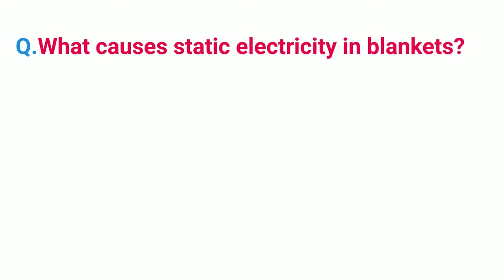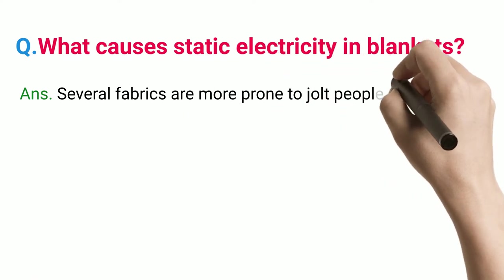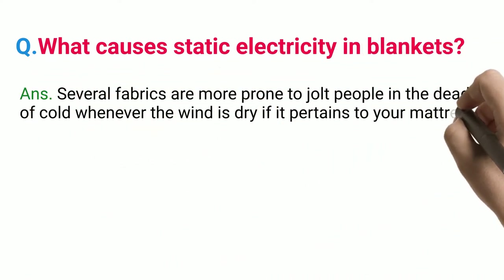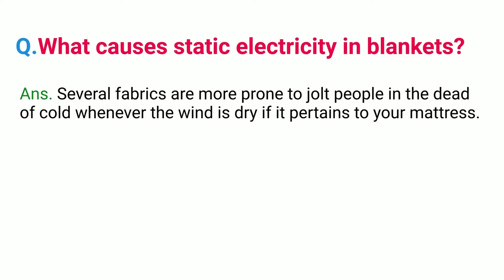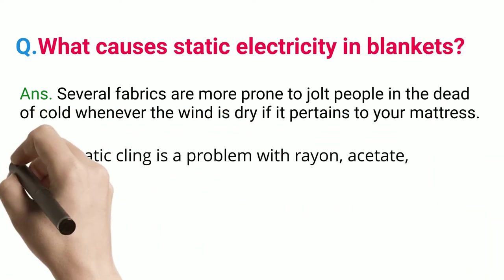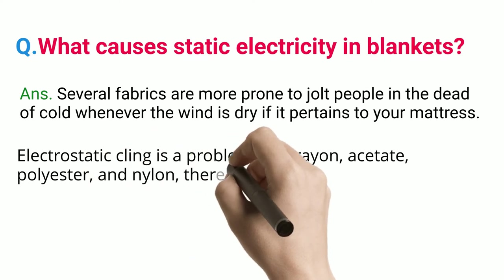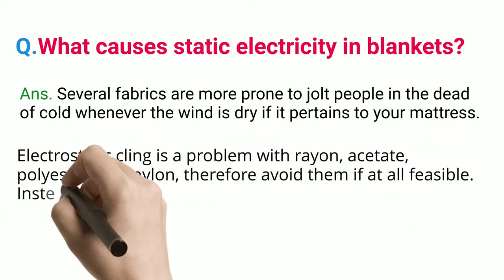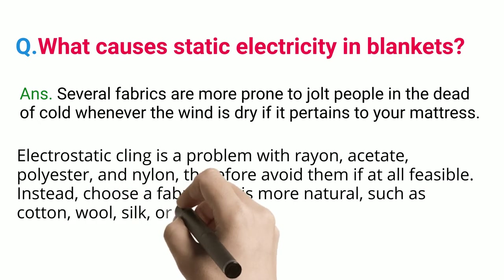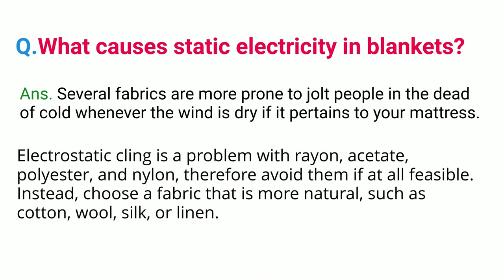What causes static electricity in blankets? Several fabrics are more prone to jolt people in cold, dry conditions when it pertains to your bedding. Electrostatic cling is a problem with rayon, acetate, polyester, and nylon, so avoid them if at all feasible. Instead, choose a fabric that is more natural, such as cotton, wool, silk, or linen.